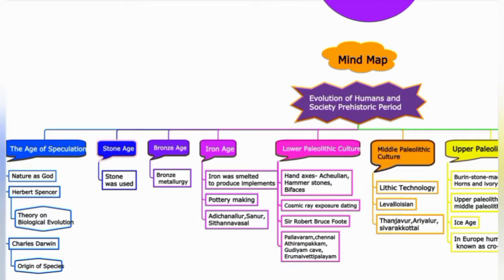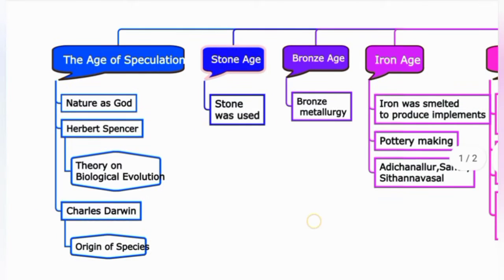The Age of Speculation — this is the nature of the human species. Human species is the only species in this universe that can understand or explain. Herbert Spencer's theory on biological evolution, and Charles Darwin's Origin of Species — Natural Selection, Survival of the Fittest. If you want to survive, you can learn.